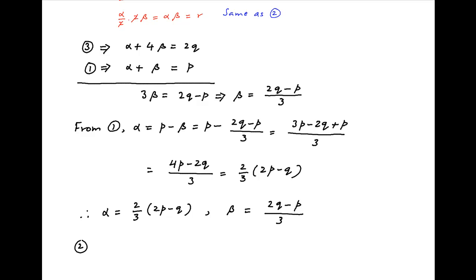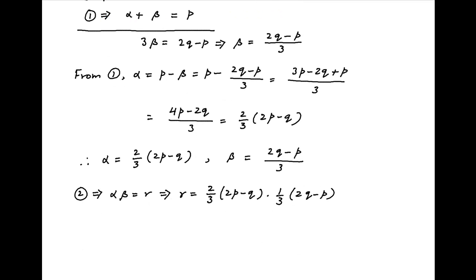From result 2 we know that alpha beta is equal to r. Substituting the values of alpha and beta, we get r is equal to 2 upon 3 times 2p minus q, times 1 upon 3 times 2q minus p. Therefore r is equal to 2 upon 9 times 2p minus q times 2q minus p, which is the required answer.